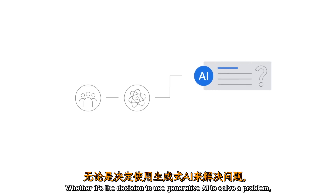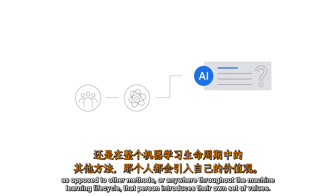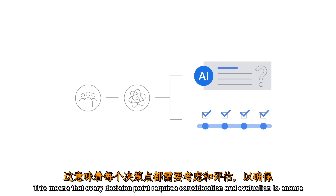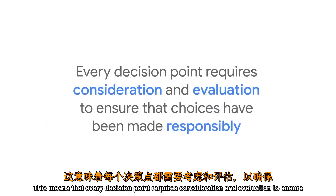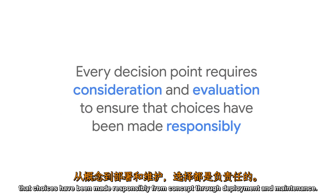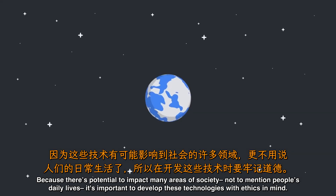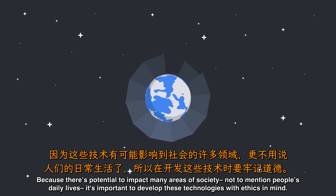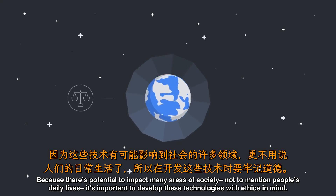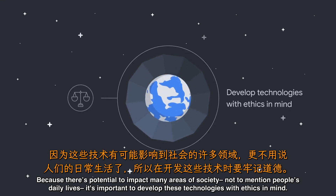Whether it's the decision to use generative AI to solve a problem as opposed to other methods, or anywhere throughout the machine learning lifecycle, that person introduces their own set of values. This means that every decision point requires consideration and evaluation to ensure that choices have been made responsibly from concept through deployment and maintenance. Because there's potential to impact many areas of society, not to mention people's daily lives, it's important to develop these technologies with ethics in mind.